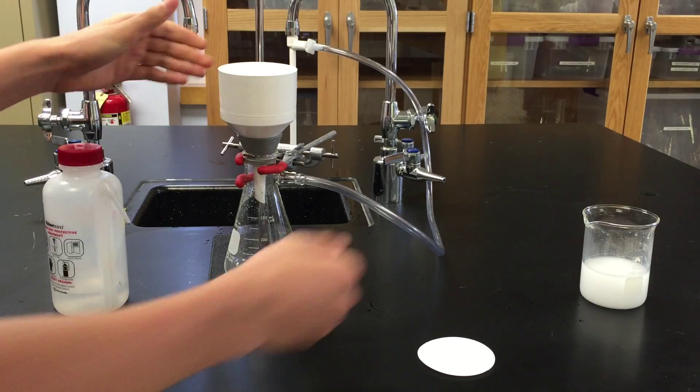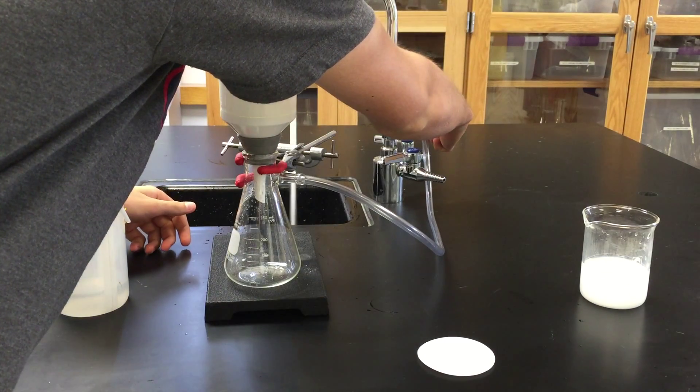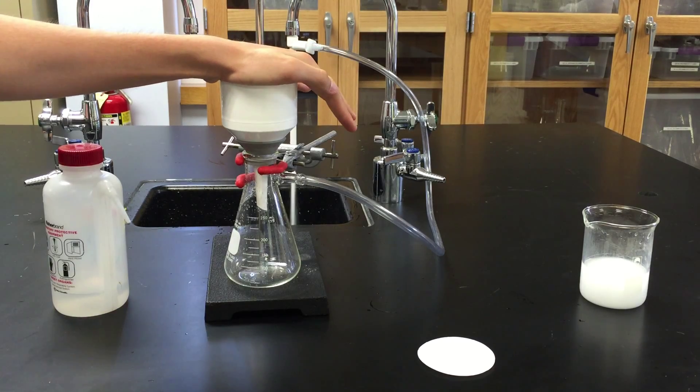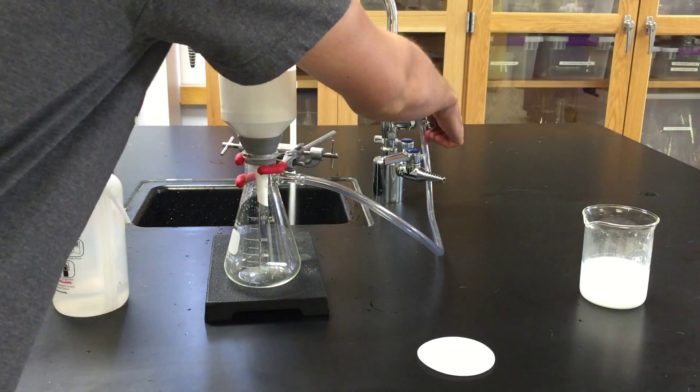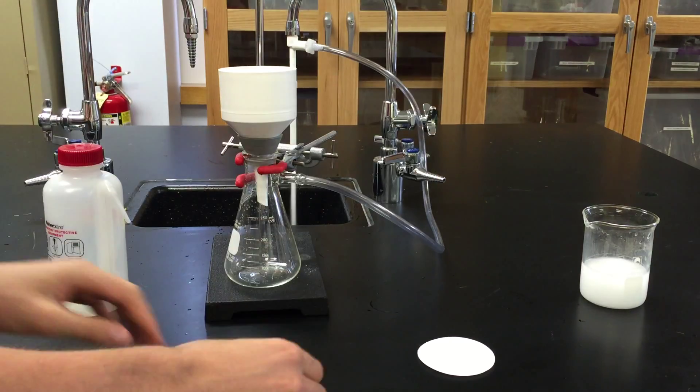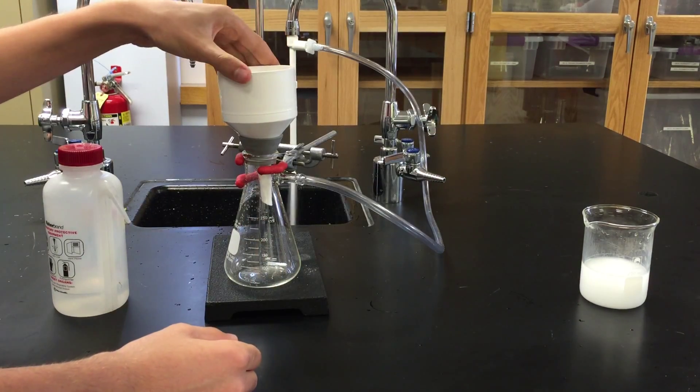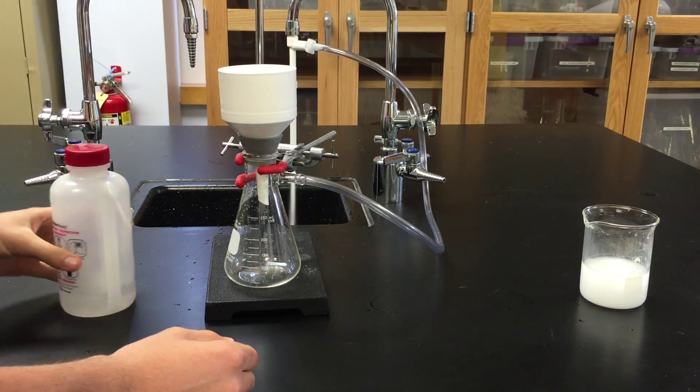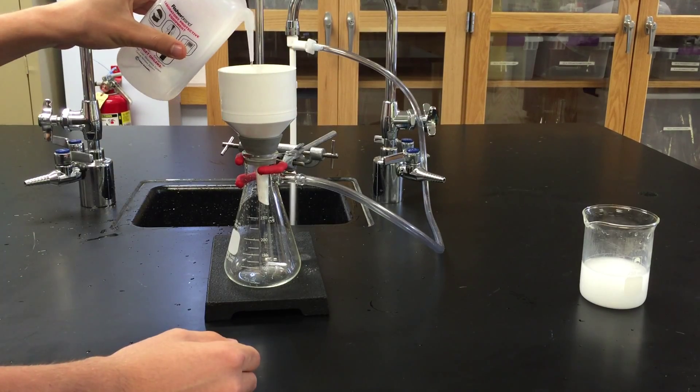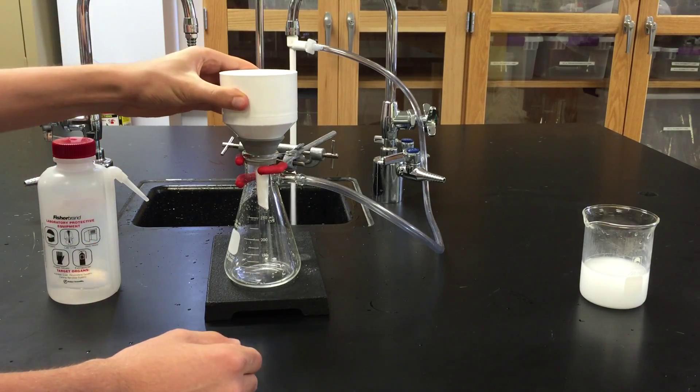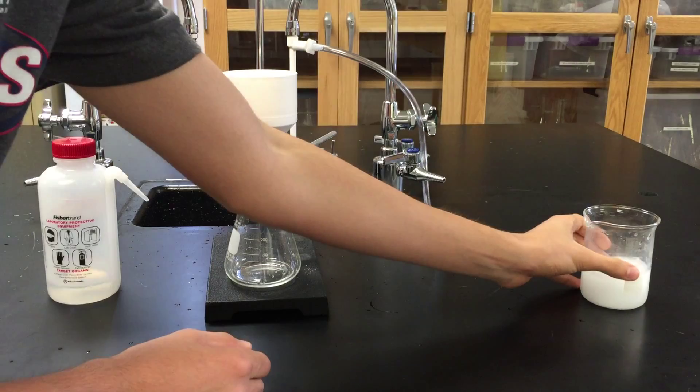Now turn on the water. The adapter connected to the faucet will create suction, and that will help the filtering process. Now place the filter paper into the funnel and squirt some water on it to make the filter paper adhere to the bottom of the funnel and to prevent any precipitate particles from seeping underneath and into the flask.